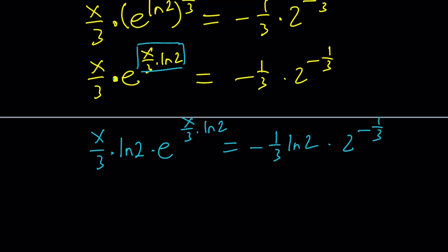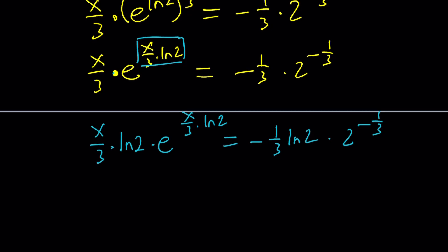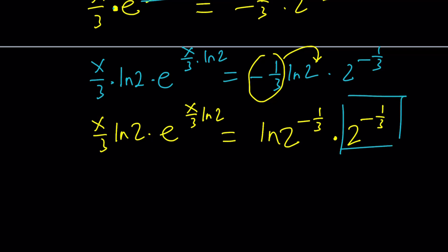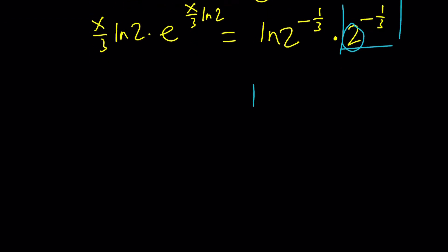Notice that here we have x over 3 multiplied by ln 2. We need the same thing here. Let's multiply both sides by ln 2, which is a constant. Let's bring this negative 1 third here so it makes more sense. Now we get x over 3 ln 2 times e to the power x over 3 ln 2 equals ln 2 to the power negative 1 third times 2 to the power negative 1 third.